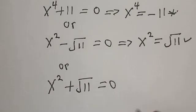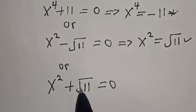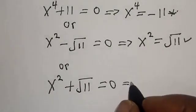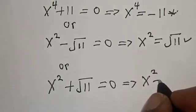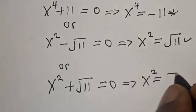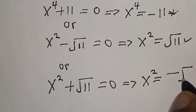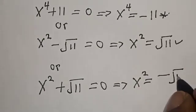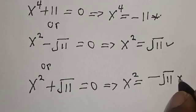Also from case three, x squared plus the square root of 11 equals zero. This implies that x squared is equal to minus the square root of 11. We reject this.